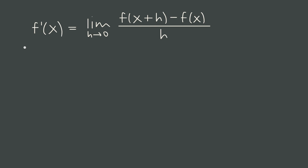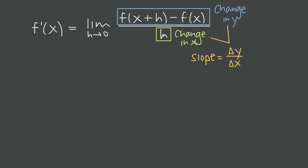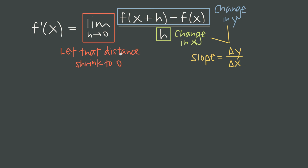No matter what notation we use, this is the formal definition of the derivative. It looks complicated, but it really isn't if we break it down. If we choose h to be some small distance, the numerator gives us the change in y between the value of the function at x and the value at x plus h. The denominator gives us the change in x, since h is that little distance — so this fraction gives us slope: change in y over change in x, or rise over run. We're taking the limit as h goes to zero, letting that distance between the two points shrink to zero as the secant line turns into a tangent line.